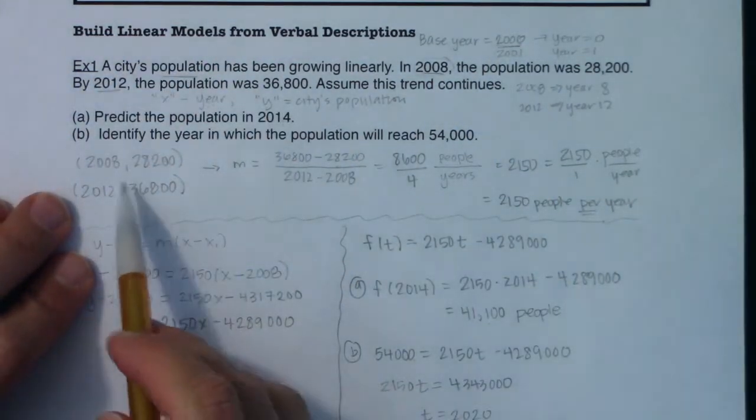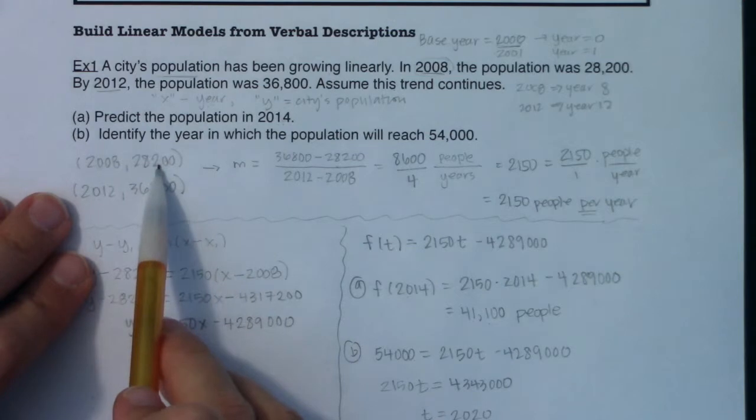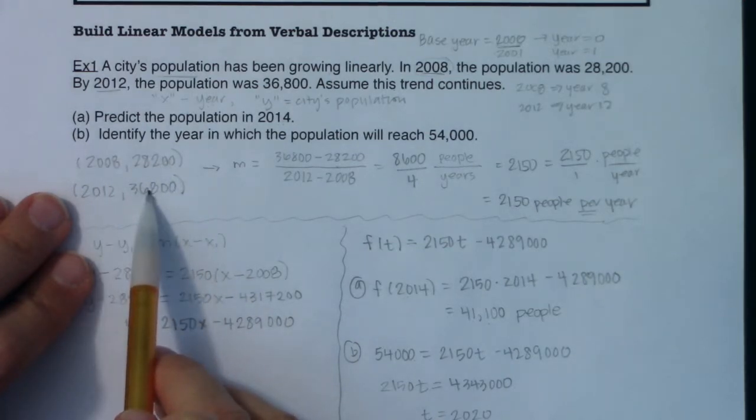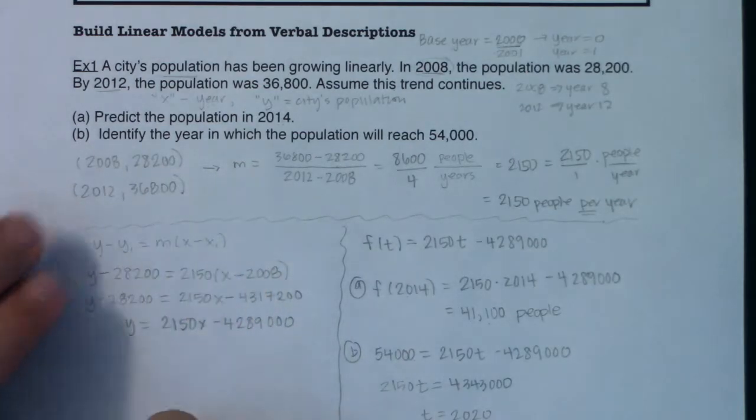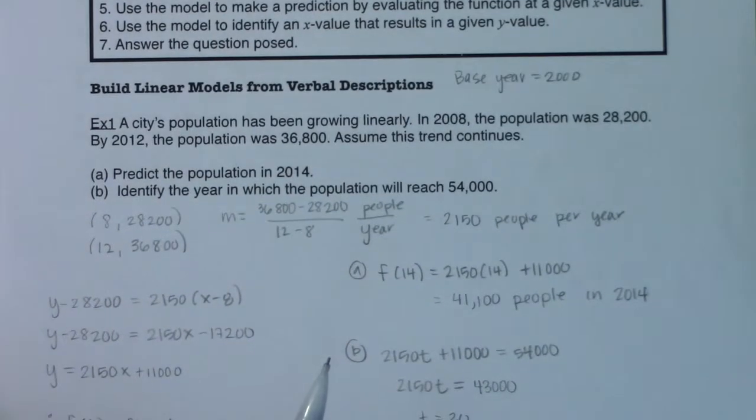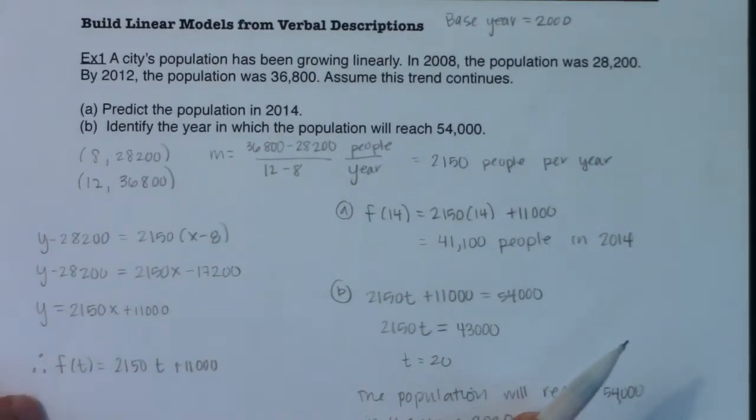Now, if that was the case, this ordered pair would be eight, 28,200. And this would be 12, 36,800. These would be much smaller numbers and it would make your life easier. So I'm going to put up a different version of this problem, a different solution with the base year of 2000. So I want you to see what this looks like if the base year is actually 2000. So if my base year is 2000, you see my ordered pair is eight, 28,200 and then 12, 36,800.